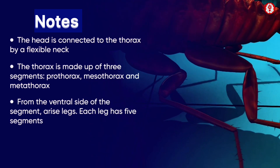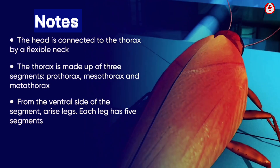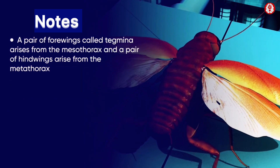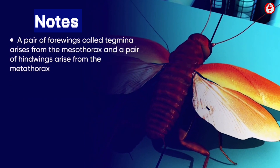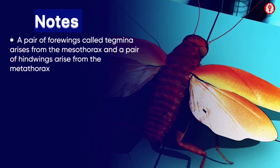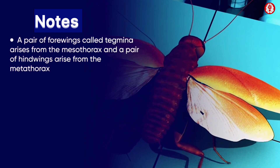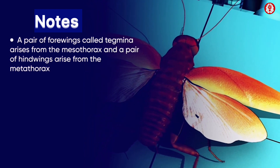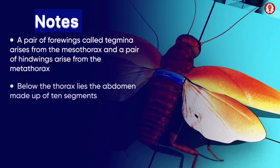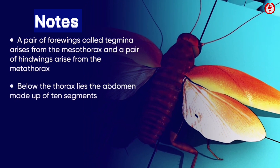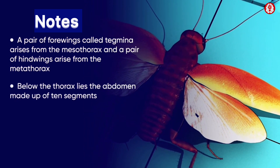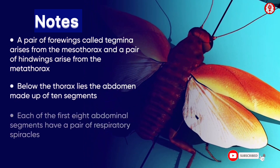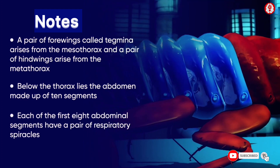Each leg has five segments. A pair of forewings called tegmena arises from the mesothorax, and a pair of hind wings arise from the metathorax. Below the thorax lies the abdomen, which is made up of ten segments.